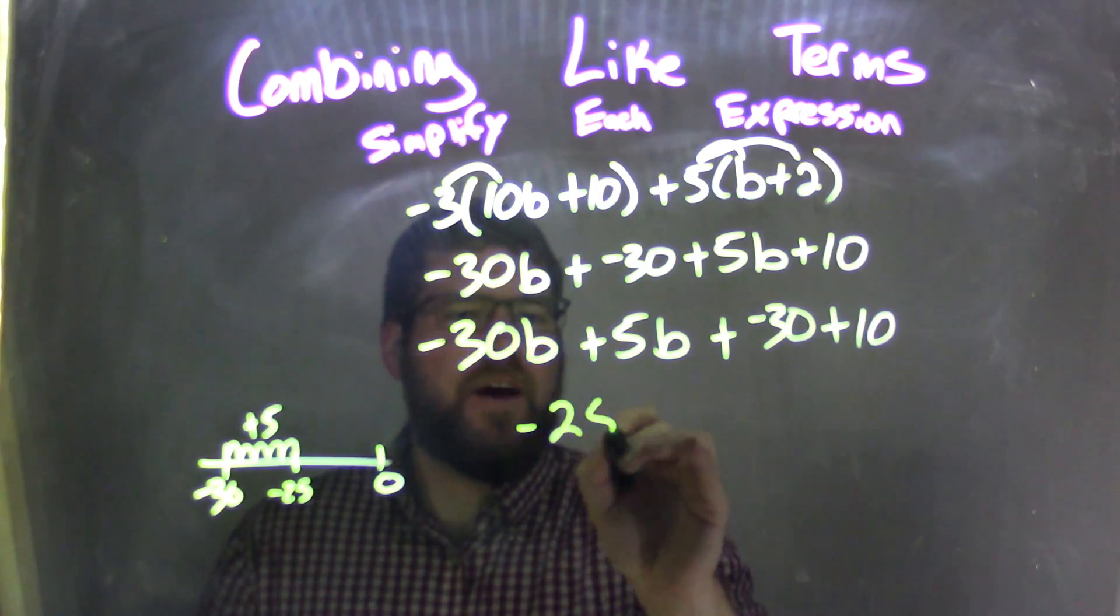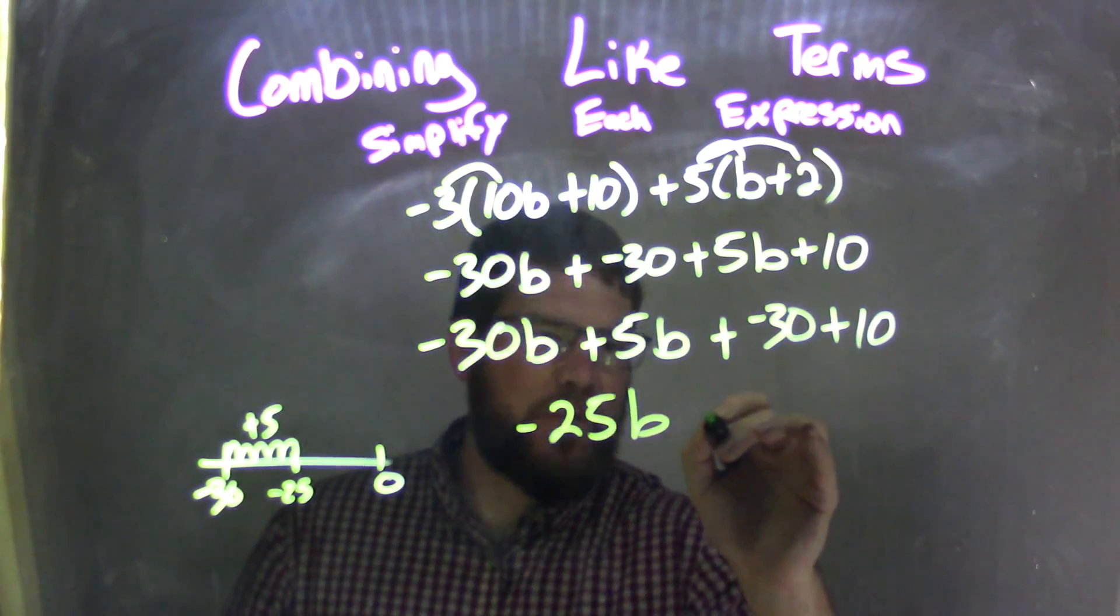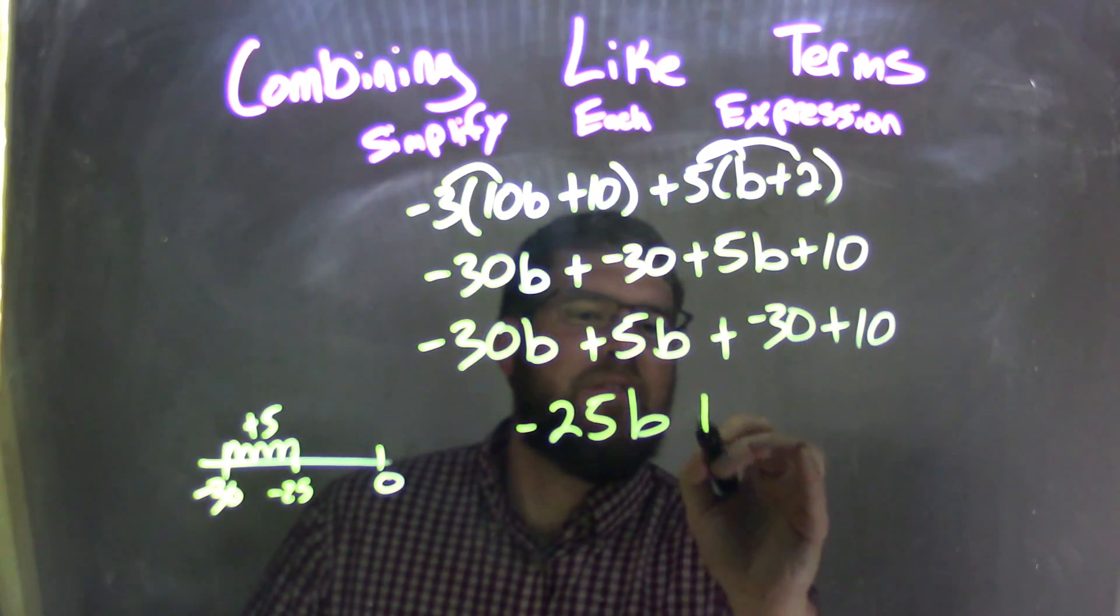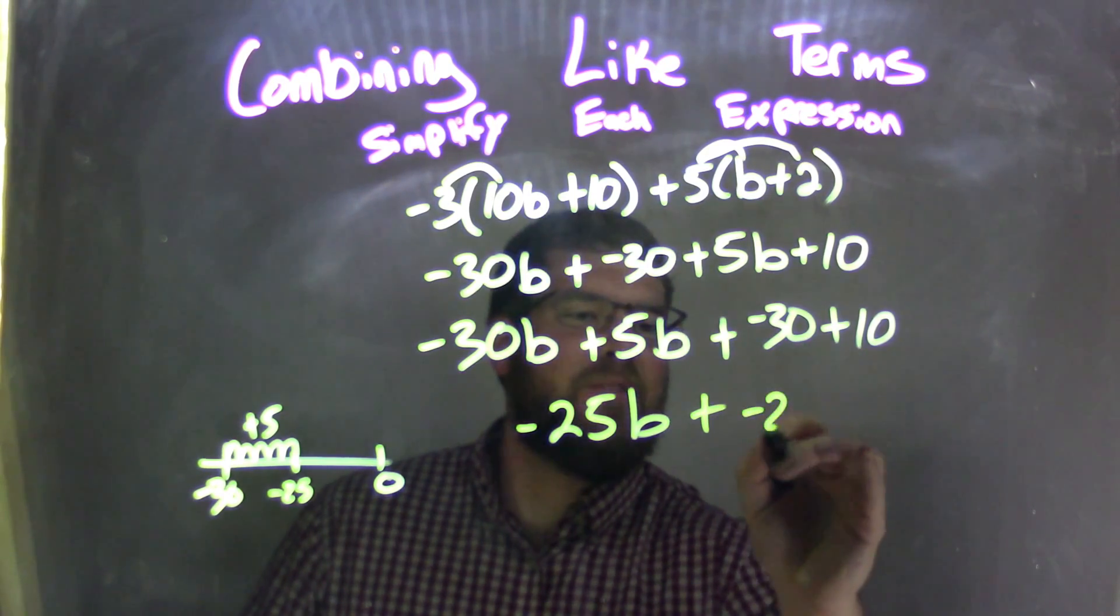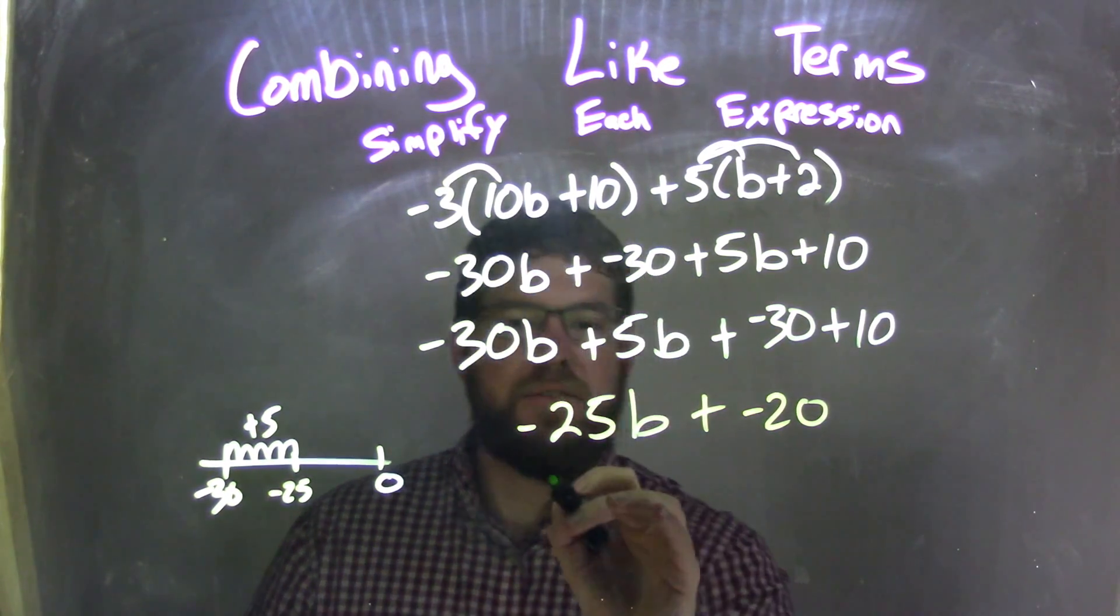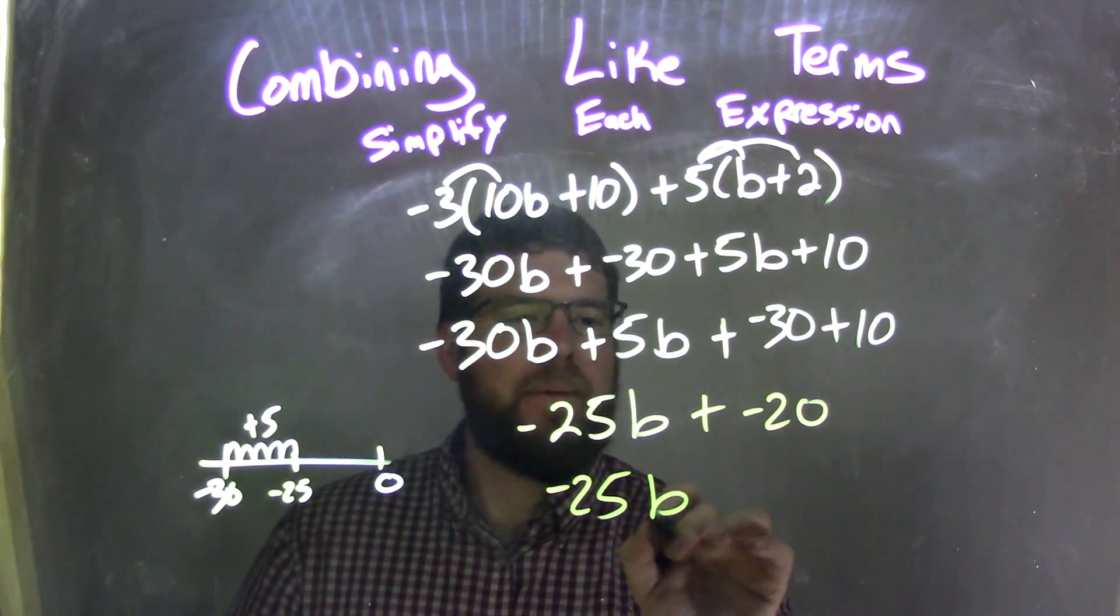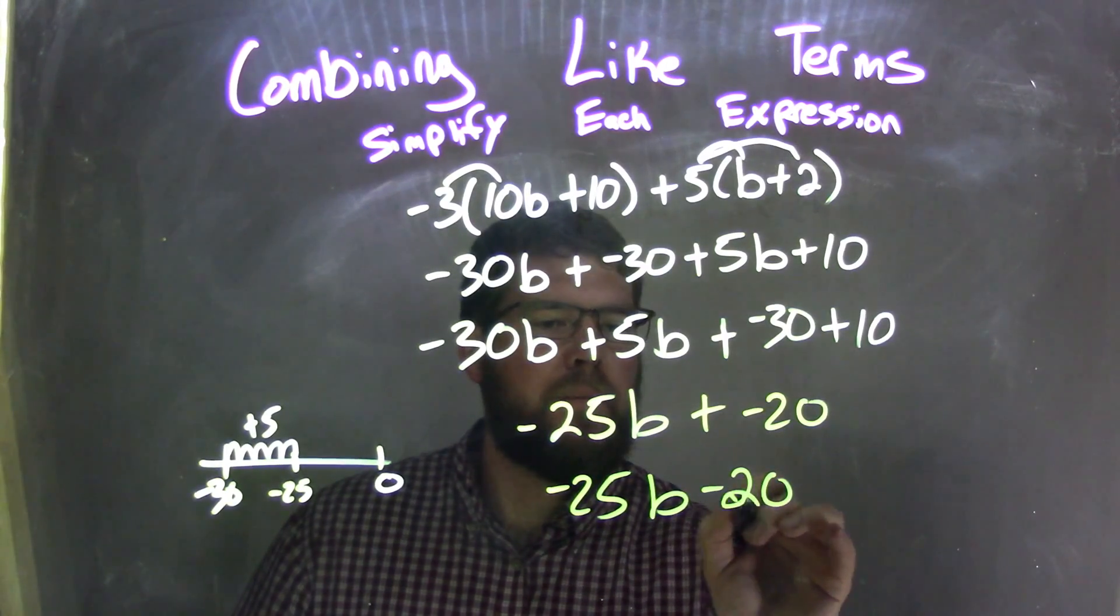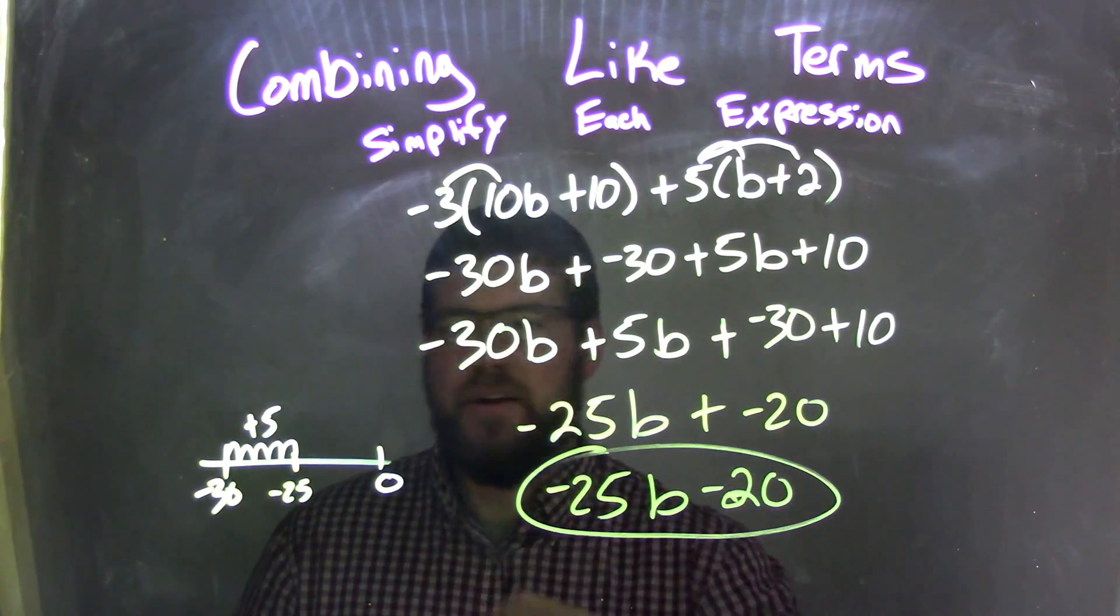So we have a negative 25b here, and hopefully you can do the next one. Negative 30 plus 10 is negative 20. We can write this more cleanly. Adding a negative is just subtraction, so we have negative 25b minus 20, and that is our final answer here.